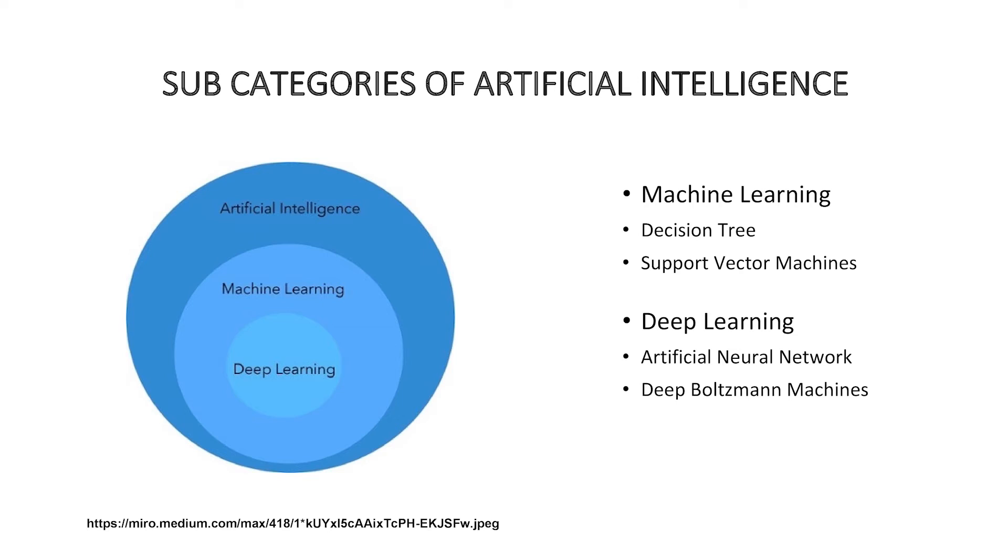The first subcategory is machine learning. As the name suggests, the machines will learn based on a sample data known as training data in order to make future predictions like weather forecasting. Some of the machine learning algorithms are decision trees, support vector machines, etc.